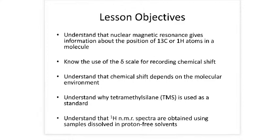The lesson objectives are to understand that nuclear magnetic resonance gives information about the position of carbon-13 or proton atoms in the molecule, know the use of the delta scale for recording chemical shift, understand that chemical shift depends on the molecular environment, understand why tetramethylsilane (TMS) is used as a standard, and understand that NMR spectra are obtained using samples dissolved in proton-free solvents.